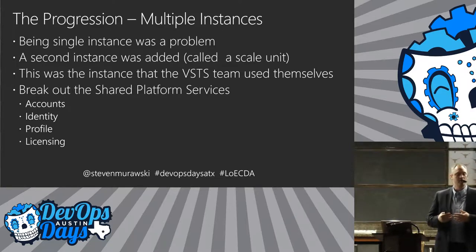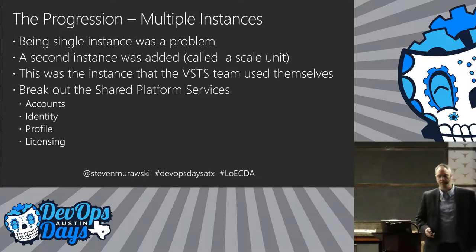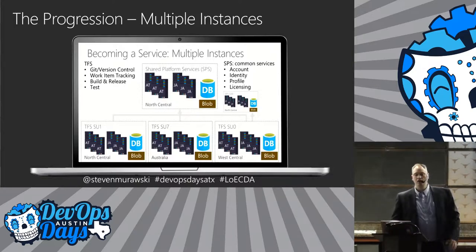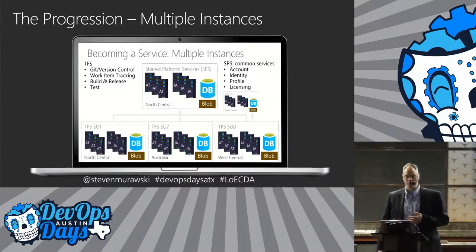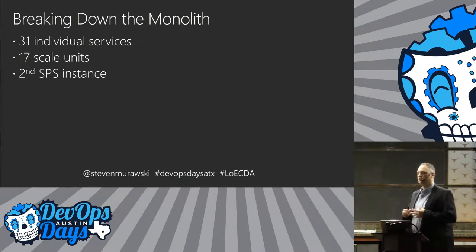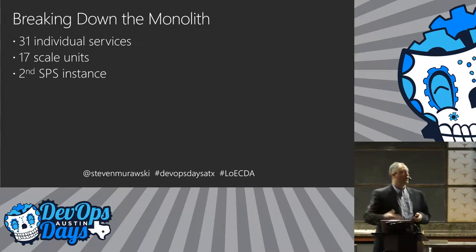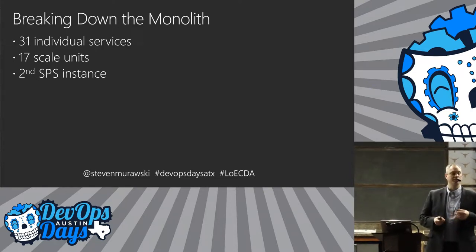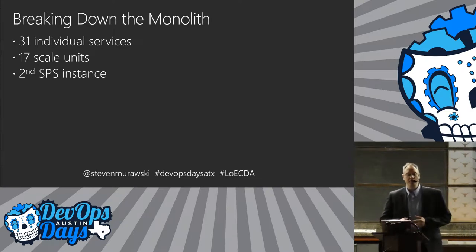SPS had to stand separate from all the TFS instances handling source control, work items, and other features. Over time, more and more scale units were added — now there are 17 scale units handling different groups of customers. They also continued to break down services. Starting with a monolith — TFS was the application — today there are 31 individual services broken out across 17 scale units, and they created a second instance of the shared services platform to provide availability.